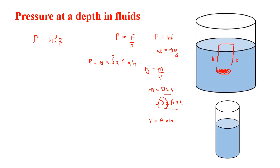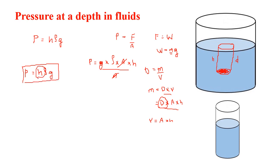So MG is replaced by density times area times height times G, giving us the formula P equals H rho G. Pressure in a fluid depends on three things: the height or depth, the density (rho), and the acceleration due to gravity (G).